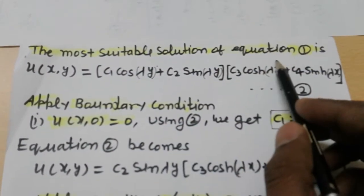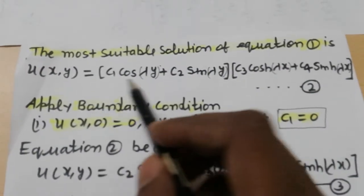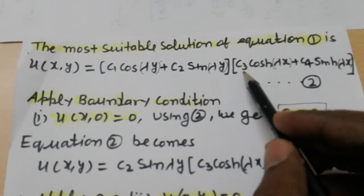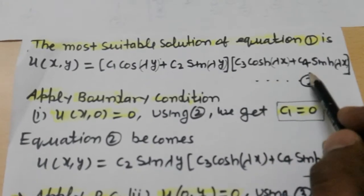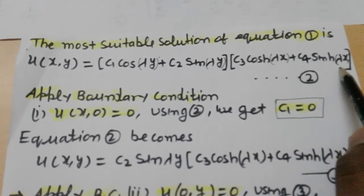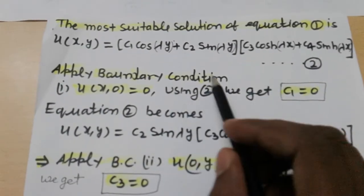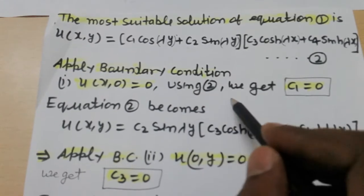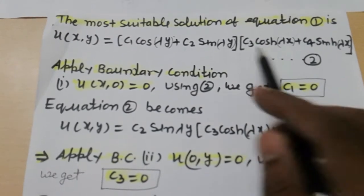The most suitable solution of equation 1 is u(x,y) = (c1 cos λy + c2 sin λy)(c3 cosh λx + c4 sinh λx), this is equation number 2. Applying the first boundary condition u(x,0) = 0 using equation 2, we get c1 = 0.